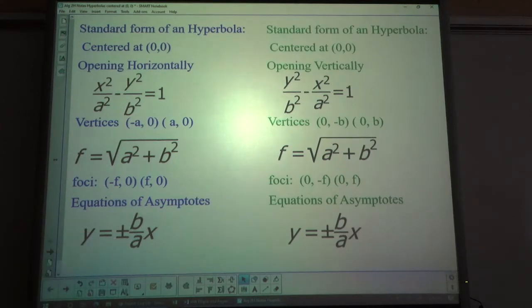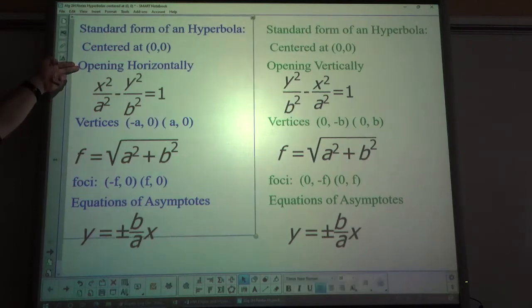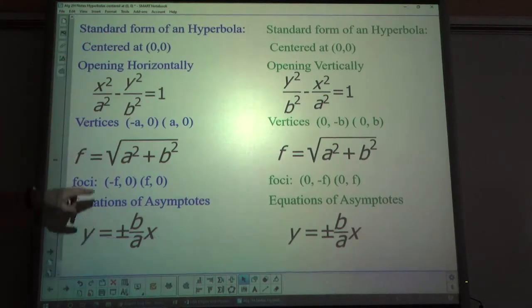So, those are the things I'm going to ask you to find for each of these. Opening, which way it opens, horizontally or vertically. The vertices, the foci, and the equation of the asymptotes.